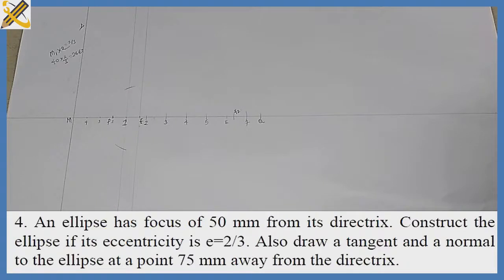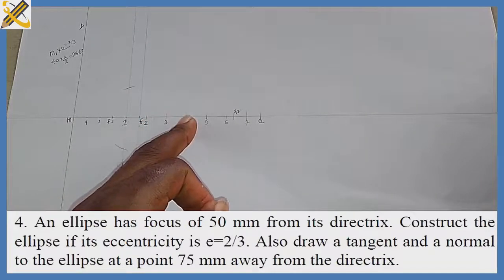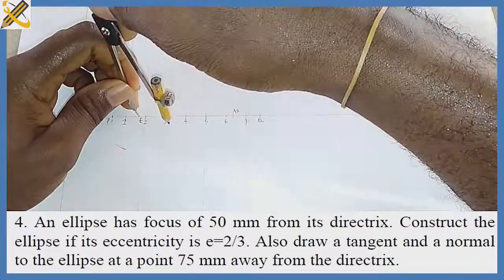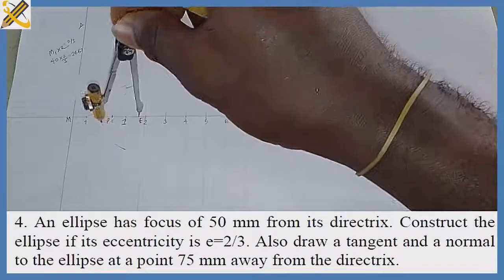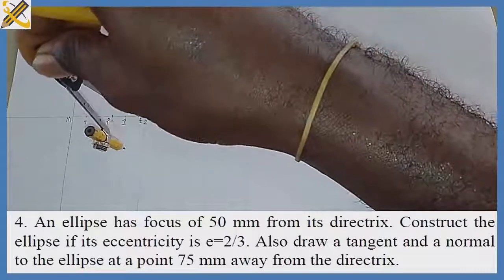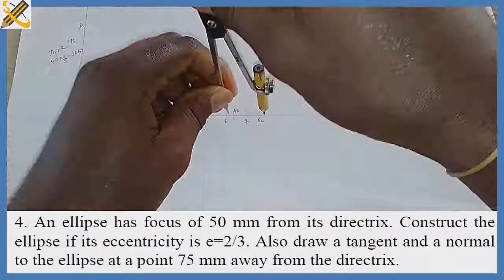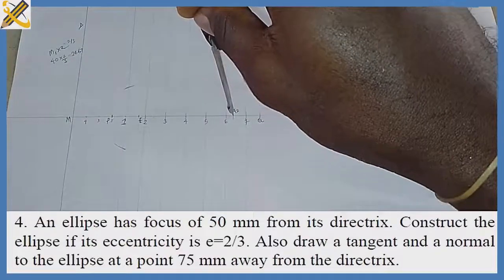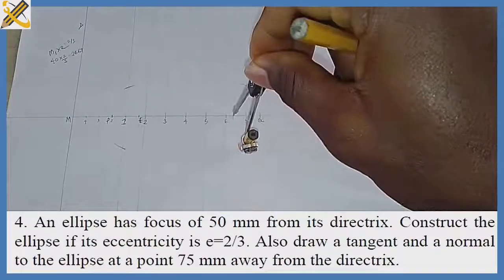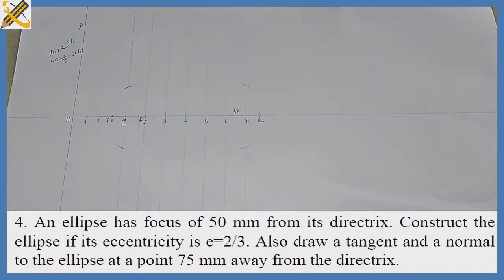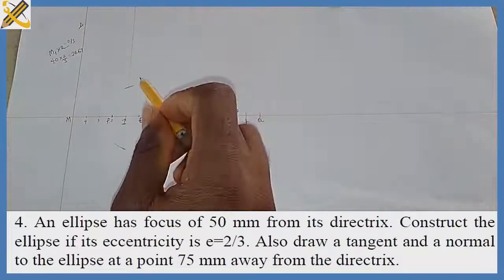Before I proceed, at each of the divisions I'm going to draw a vertical line. Then, with that same radius I used from F1 to strike an arc on mark 1, I place it on F2 and strike an arc on mark 7.